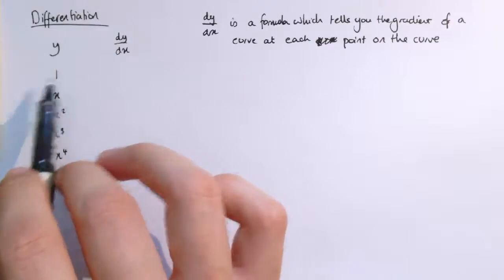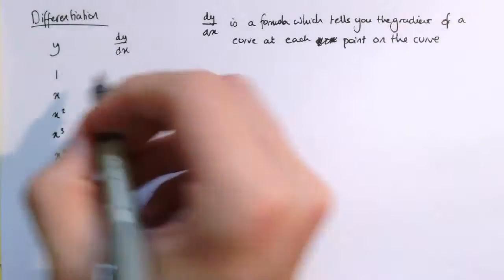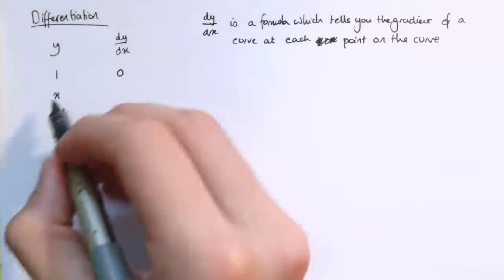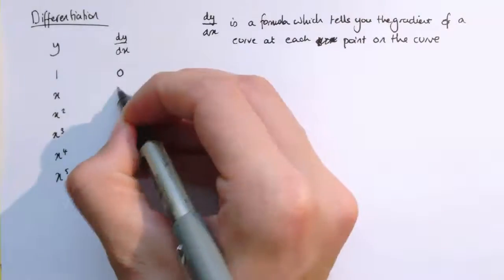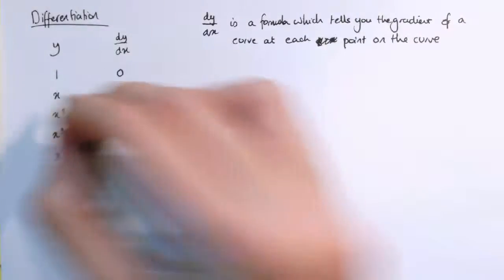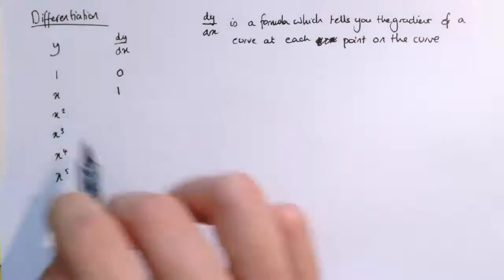And we're going to work out what dy/dx is. Now dy/dx is a formula which tells you the gradient of the curve at each point on the curve. For just y equals 1, that's a straight line, just horizontal line equals 1. That's got gradient 0. We know that y equals x is just a straight line that has gradient 1. So those are just straight lines. They've got a constant gradient.